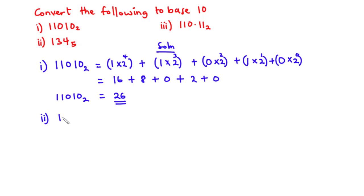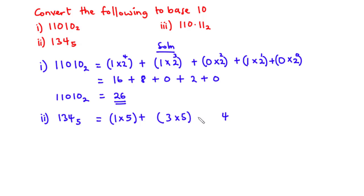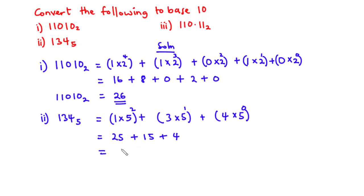Now let's solve the second one: 134 base 5. We list the digits in order: 1, 3, and 4. We multiply the base 5 by each digit and sum them: 1×5² + 3×5¹ + 4×5⁰. Counting exponents from the right starting at 0, we get 0, 1, and 2. Simplifying: 5² is 25 times 1 is 25; 5¹ is 5 times 3 is 15; 5⁰ is 1 times 4 is 4. So 25 plus 15 is 40, plus 4 is 44. Therefore, 134 base 5 is equal to 44 base 10.